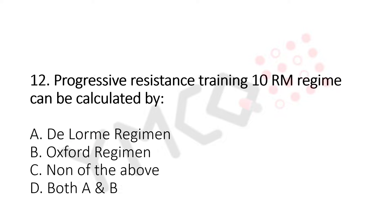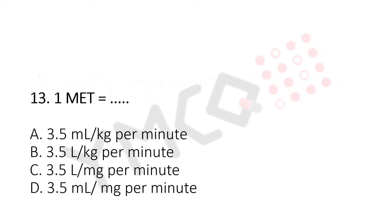Let's move to question number 13. 1 MET equals: Option A, 3.5 ml per kg per minute. Option B, 3.5 litre per kg per minute. Option C, 3.5 ml per mg per minute. And the answer is Option A, 3.5 ml per kg per minute.